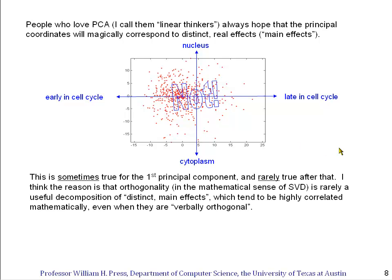Well, this kind of clean separation almost never happens, despite the linear thinkers wishing that they would. It is sometimes, maybe even often true, that the largest principal component corresponds to some identifiable main effect in the data. So possibly that main effect could be early in cell cycle versus late in cell cycle. What I'm objecting to is the idea that something like nucleus versus cytoplasm is orthogonal in the mathematical sense to early in cell cycle, late in cell cycle. The linear thinkers are confused about what orthogonality means in the precise mathematical sense of SVD.